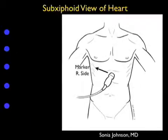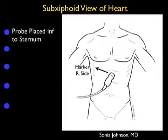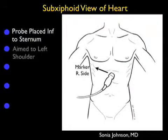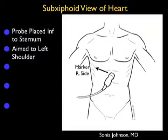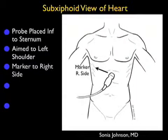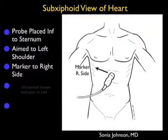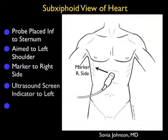Now let's learn how to perform the subxiphoid view of the heart. As shown in the pictorial to the right, the probe is coming from an abdominal position, placed just inferior to the xiphoid tip of the sternum. It's important to lay the probe flat and push down and under the sternum, aiming towards the patient's left shoulder.